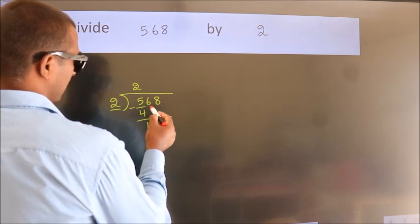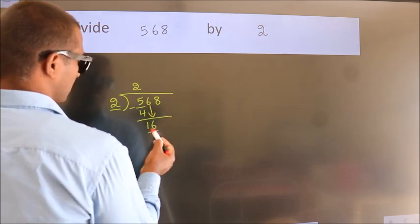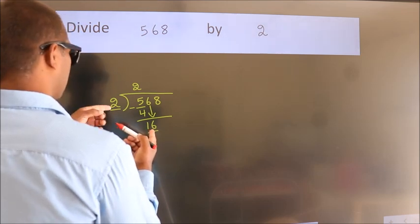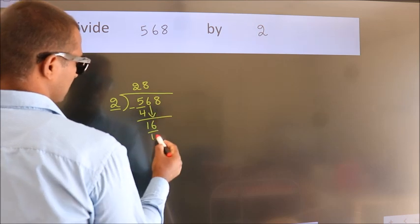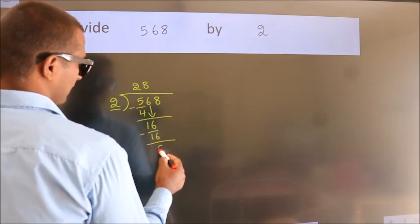After this, bring down the beside number. So, 6 down. 16. When do we get 16? In the 2 table, 2 times 8 is 16. Now we subtract. We get 0.